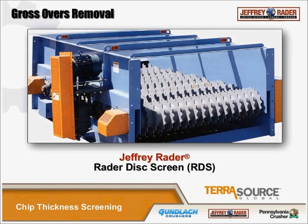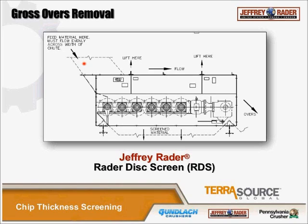For gross holders removal, everyone's pretty familiar with the disc screen. Here's a pretty wide spacing — the intent is to let chips pass through freely, with slabs, cards, or long pieces coming off the end to the rejects bunker. The entry has to come in properly, the overs come off the end of the screen, and the screened material passes through.